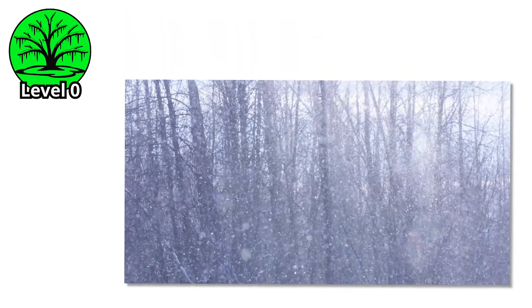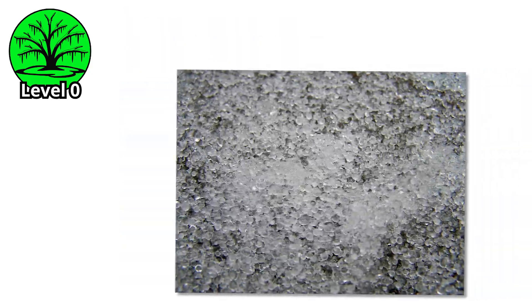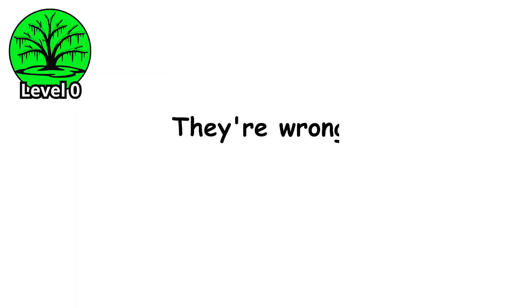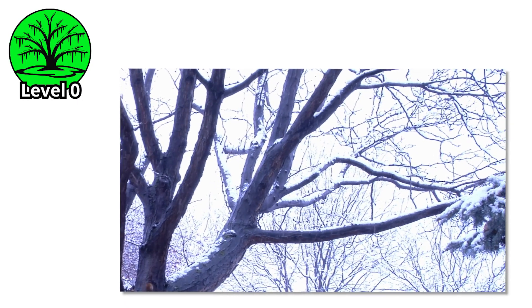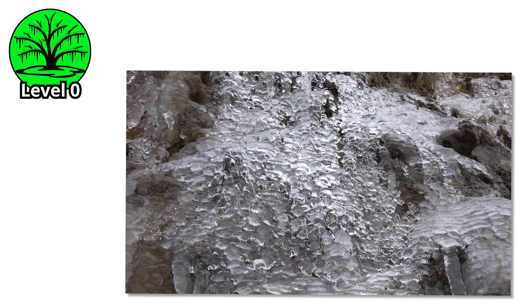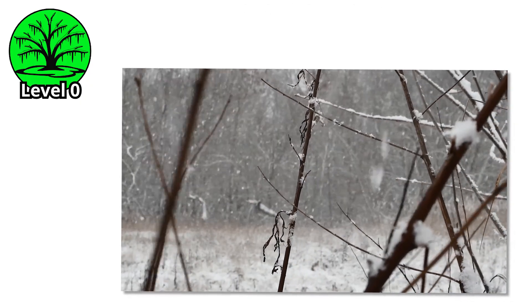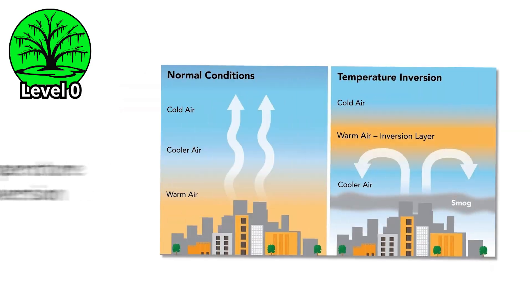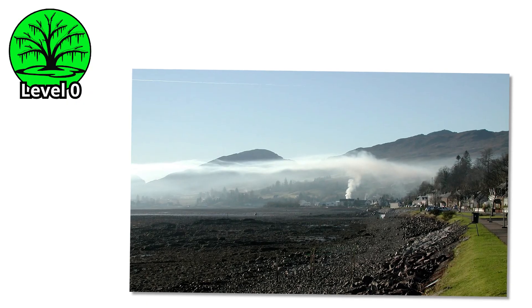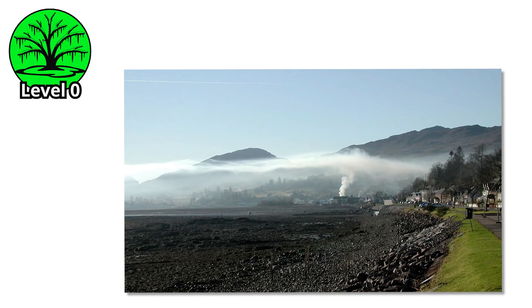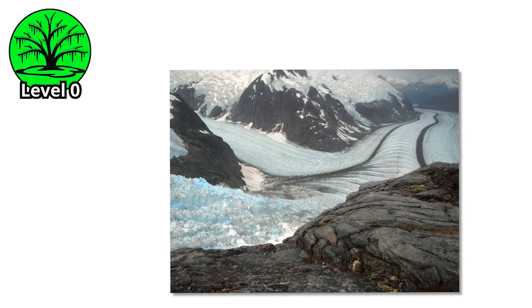Most people think ice storms are just frozen rain, a slightly worse version of sleet. They're wrong. Ice storms are freezing rain events where supercooled water droplets hit surfaces below 32°F and instantly freeze on contact, building up layer after layer of solid, glassy ice. The science behind how ice storms form is remarkably specific. You need a temperature inversion where warm air sits above cold air. Precipitation falls through that warm layer and melts into rain.